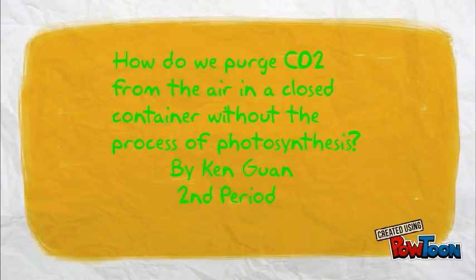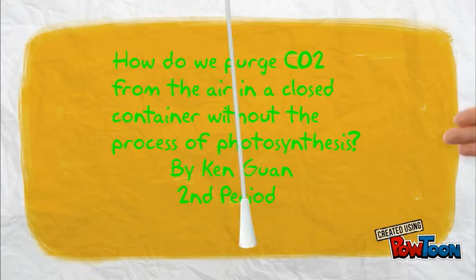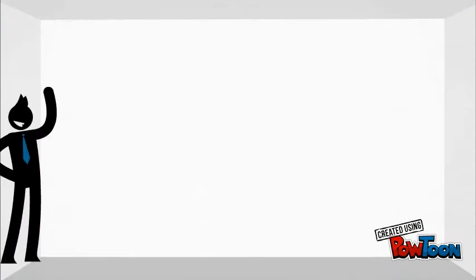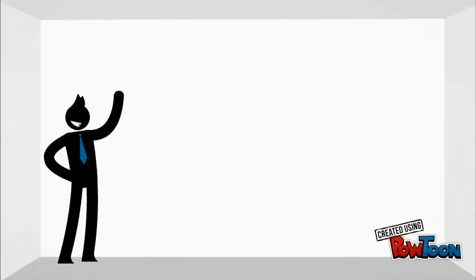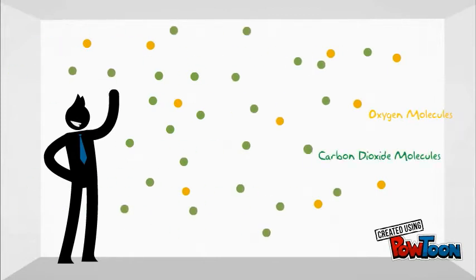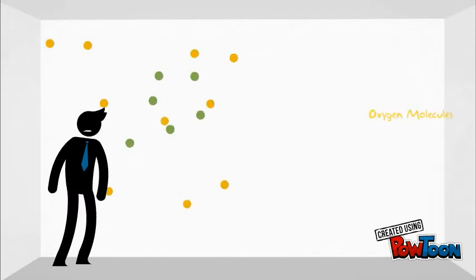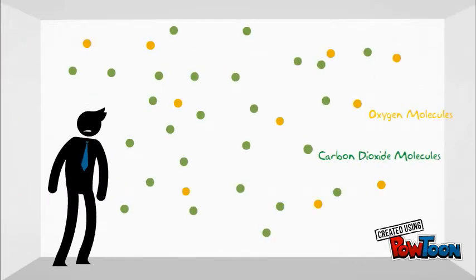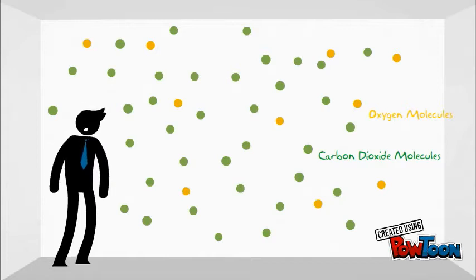How do we purge CO2 from the air in a closed container without photosynthesis? Here is a closed room with a guy, surrounded by oxygen molecules and some CO2 molecules. As he breathes and moves around, he exhales more CO2 molecules into the room. As he keeps on breathing, the number of CO2 molecules keeps increasing and cannot escape. This guy will eventually be short of breath due to the high amount of CO2 in the air.